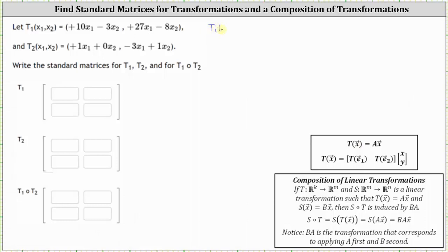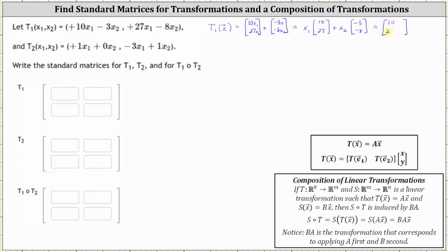Let's first write T1 of X as a sum of two matrices, where the first matrix will be a two-by-one matrix containing the X1 terms: 10·X1 and 27·X1, plus a matrix containing the X2 terms: negative 3·X2 and negative 8·X2. Factoring out X1 and X2 gives us X1 times [10, 27] plus X2 times [negative 3, negative 8]. We can write the sum of these products as a two-by-two matrix with first column [10, 27] and second column [negative 3, negative 8], times vector X = [X1, X2].